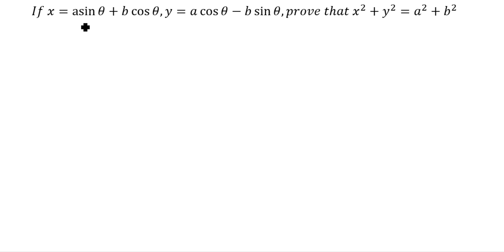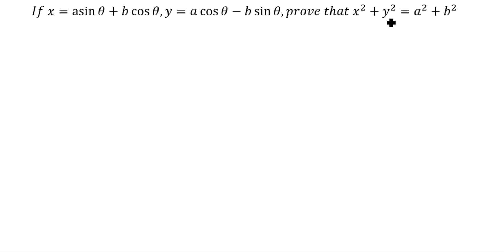If x is equal to a sin theta plus b cos theta, and y is equal to a cos theta minus b sin theta, prove that x square plus y square is equal to a square plus b square. We need to prove this one.